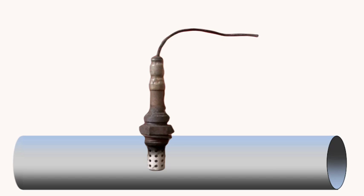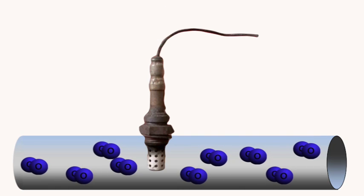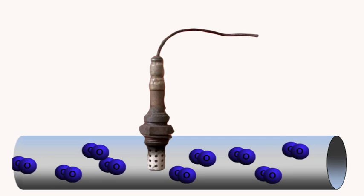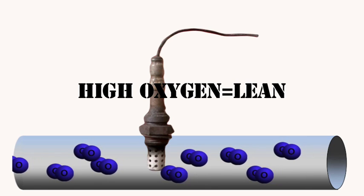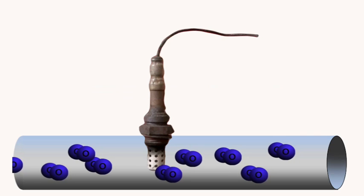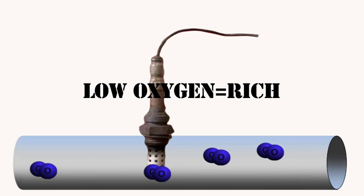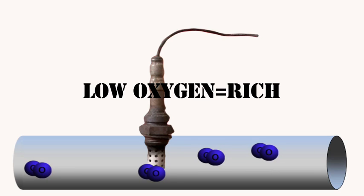Today we are looking at the basic operation of a single wire O2 sensor. Late model sensors have multiple wires and functions, but in order to begin to understand their operation you must first understand the operation at its most basic level. Hence today it is the single wire sensor we are covering. An O2 sensor produces its own voltage based on the difference between the amount of oxygen inside the exhaust stream as compared to the oxygen outside the exhaust stream. During combustion inside the engine, oxygen is leftover or not leftover directly proportional to the amount of fuel burned.